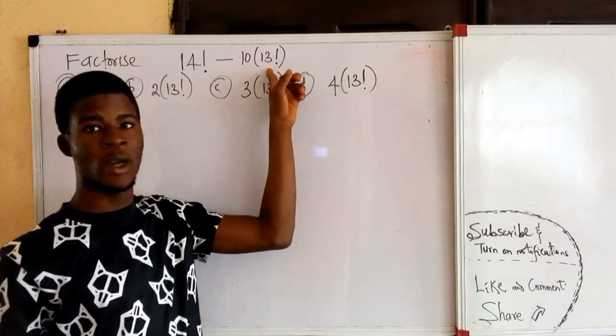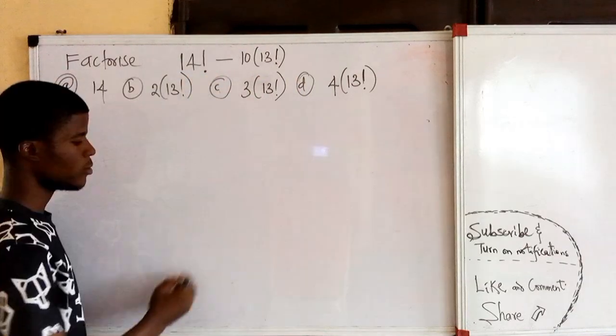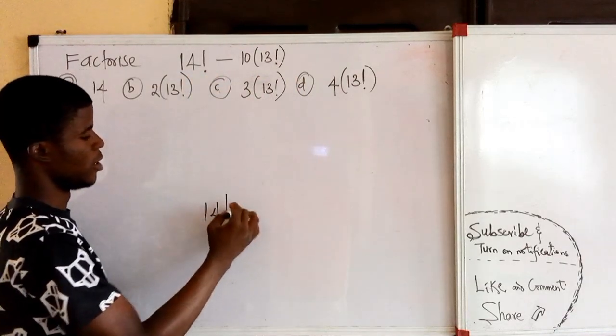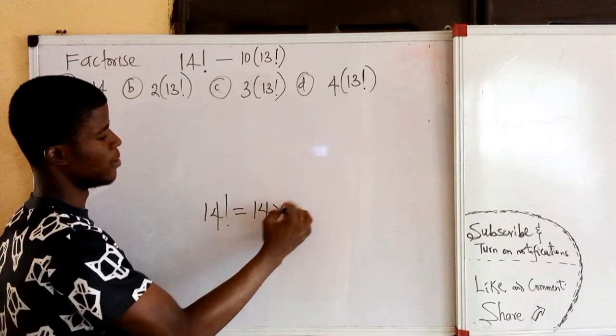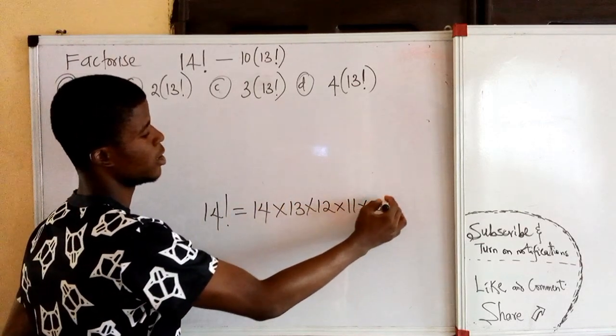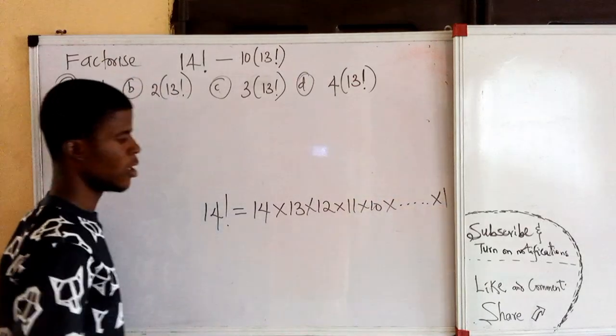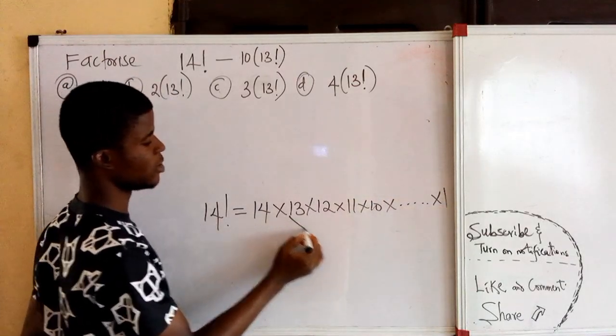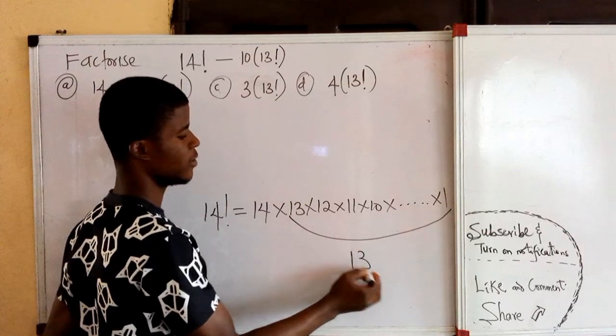13 factorial is a factor of 14 factorial. 14 factorial is equal to 14 times 13 times 12 times 11 times 10 and so on times 1. So all these from 13 to 1, they are 13 factorial.